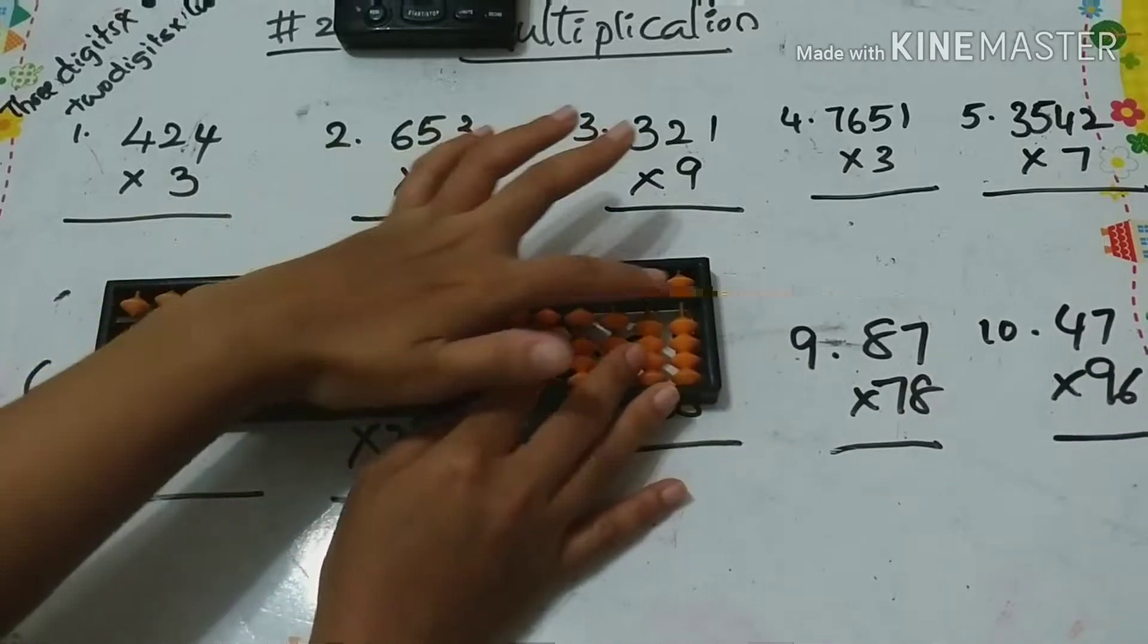Next, 47 times 96. Four nines are 36. Four sixes are 24. Then again nine sevens are 63: papa, mama, baby up, 63. Then six sevens are 42: plus ten minus six, plus ten minus six, then two. So the answer is 4512.